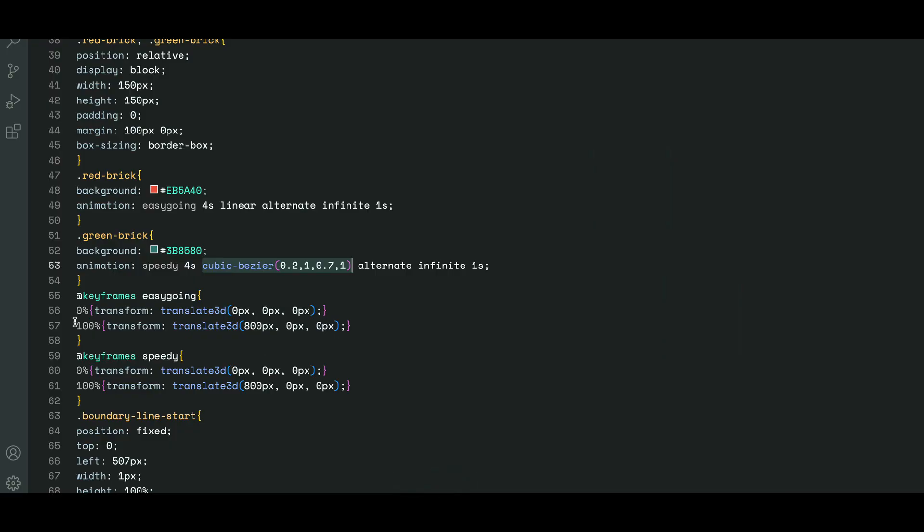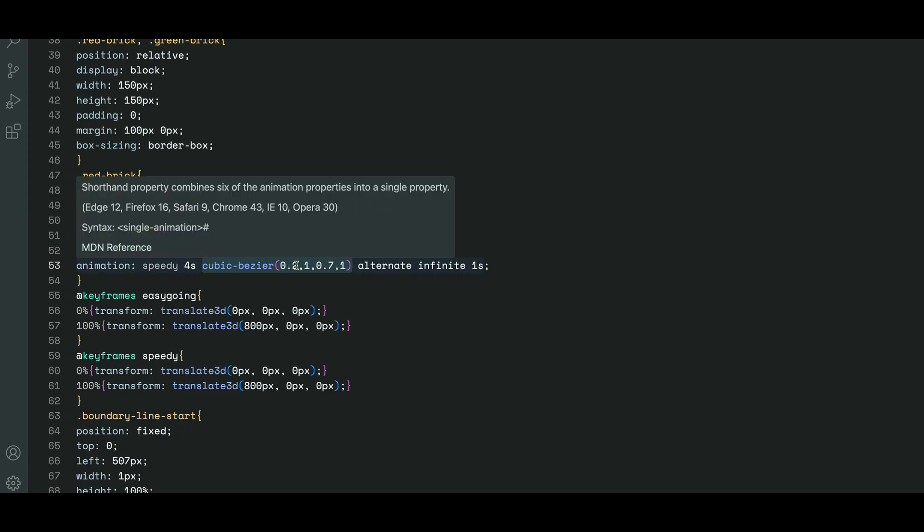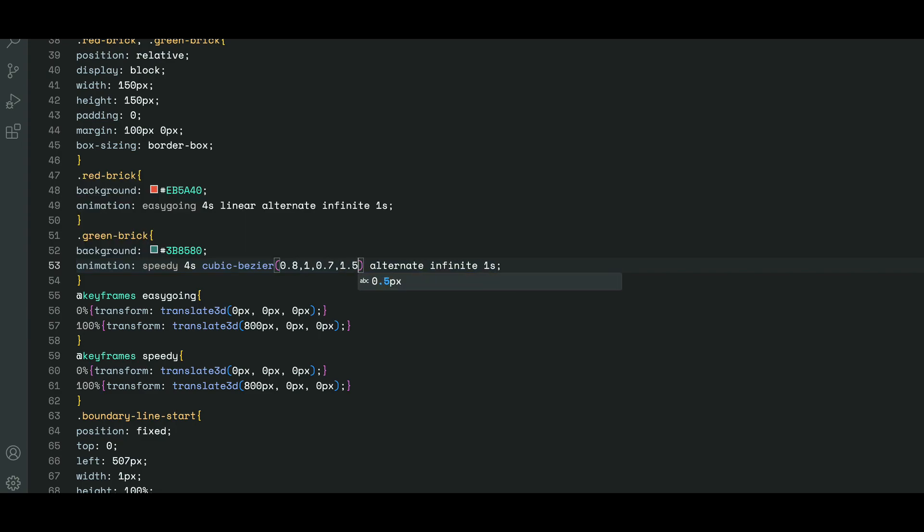For instance, let's say we change the values to 0.8, 1, 0.7 and 1.5. We can now see a marked difference in how the animation plays out. This allows us that fine control and opens up more options for our CSS animations.